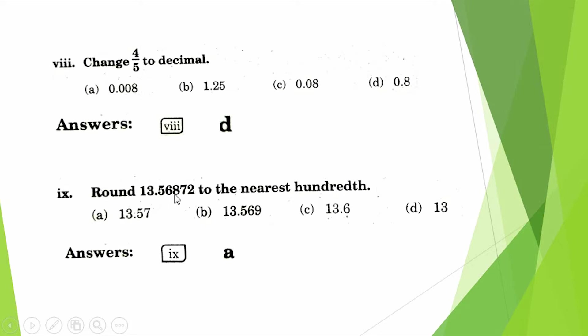Divide 0.4 by 0.2. Answer will be 2. Change 4 over 5 to decimal. Answer will be 0.8. Round 13.56872 to the nearest hundredth. The hundredth is 6. There is 8, so we will add 1 to 6. 13.57. Answer is B.